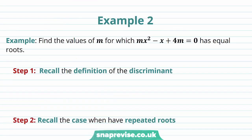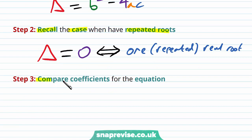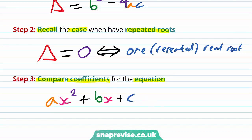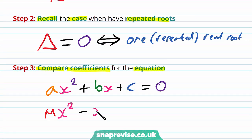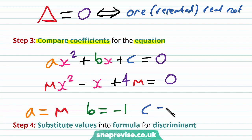Our second example asks us to find the values of m for which mx squared minus x plus 4m equals zero has equal roots. Recall that delta equals b squared minus 4ac, and for equal repeated roots we need delta equals zero. Comparing coefficients with ax squared plus bx plus c equals zero: a equals m, b equals minus 1, and c equals 4m.